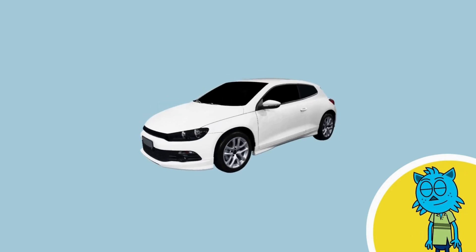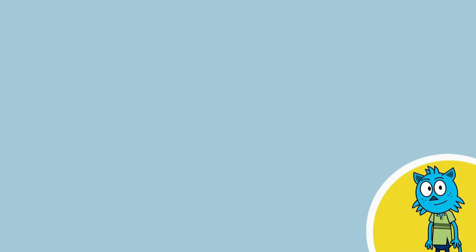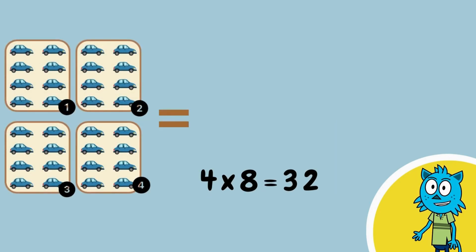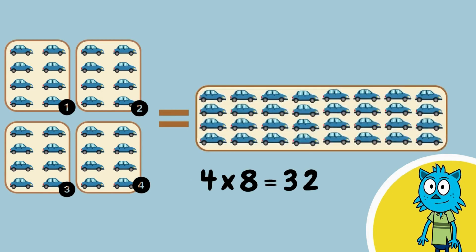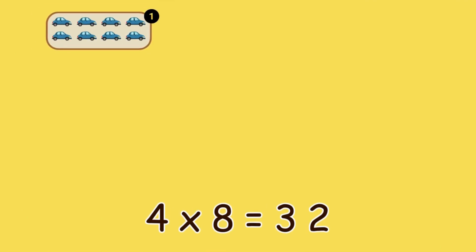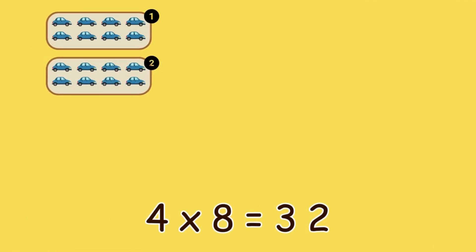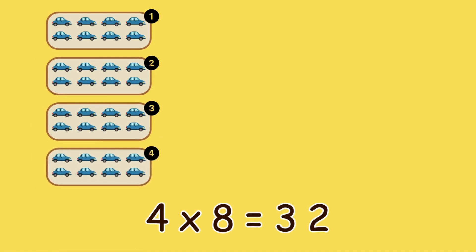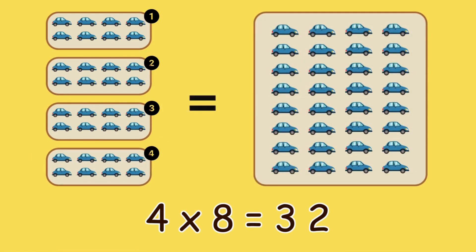Let's count some cars. Four times eight — one, two, three, four — is thirty-two.